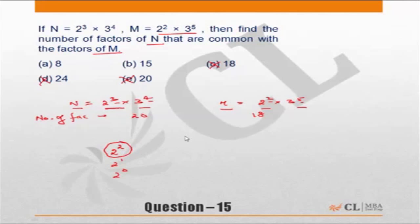Similarly, when it comes to 3, the highest you can go to is 3 to power 4, because if you go up to 3 to power 5, while 3 to power 5 is available in M, it is not available in N. So it means the common factors will have to be on the basis of 2 square and 3 to power 4.